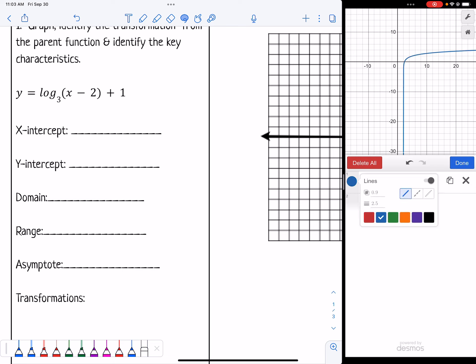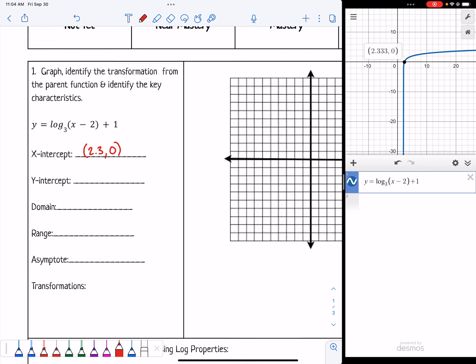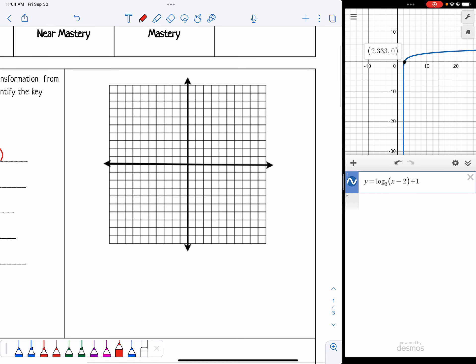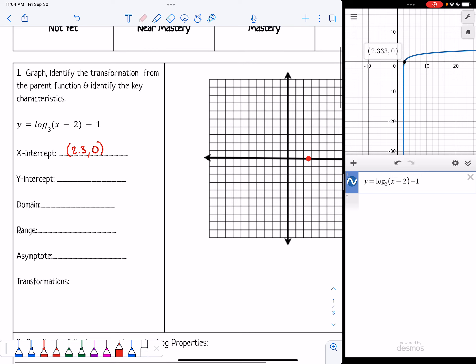Let me just change the color so that stands out a little bit better. Once we type it in, we can quickly figure out the x-intercept just by clicking on it. It looks like it's located at 2.3, 0, and it's right there at the x-axis. Then it does not have a y-intercept, so let's just put none.